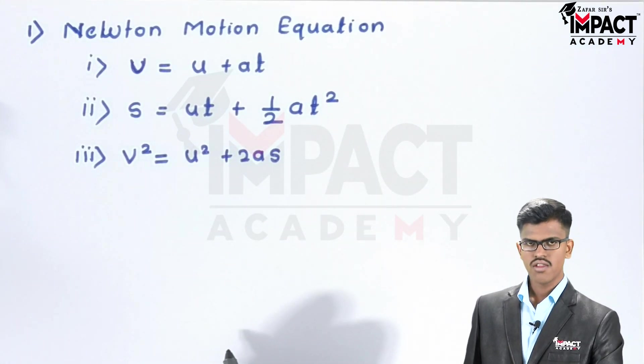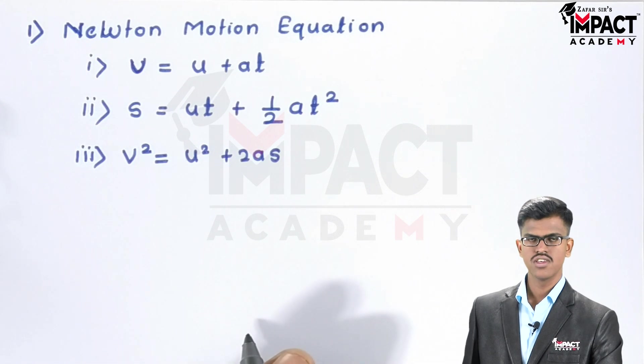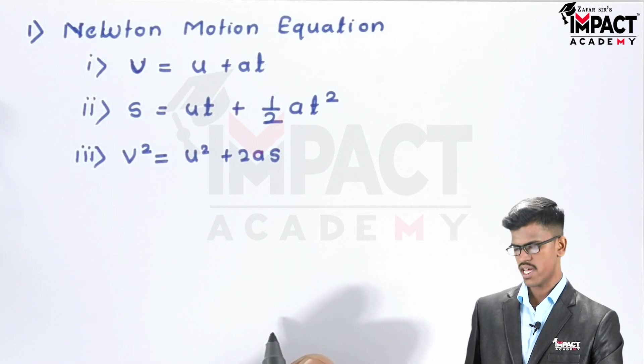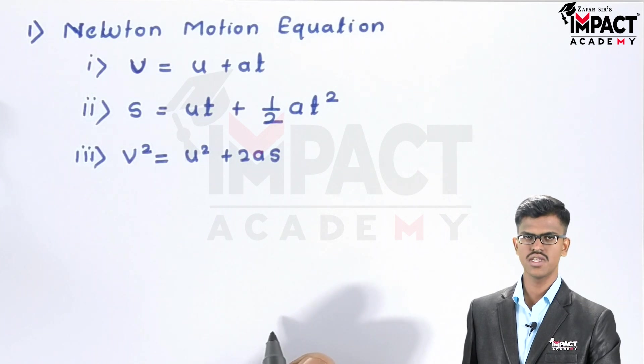The third motion equation is: v² = u² + 2as. Here, v is the final velocity, u is the initial velocity, a is the acceleration of the particle, and s is the displacement of the particle.